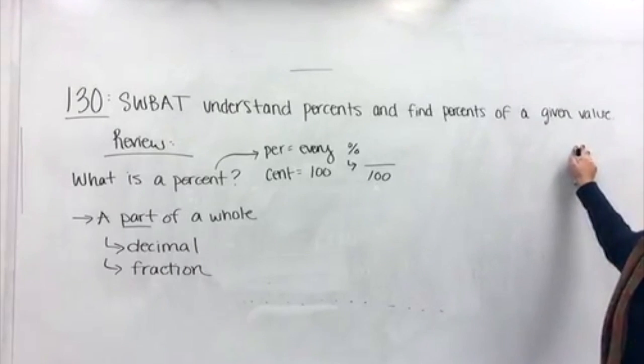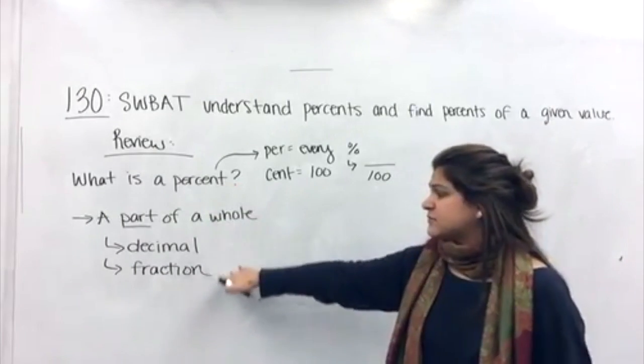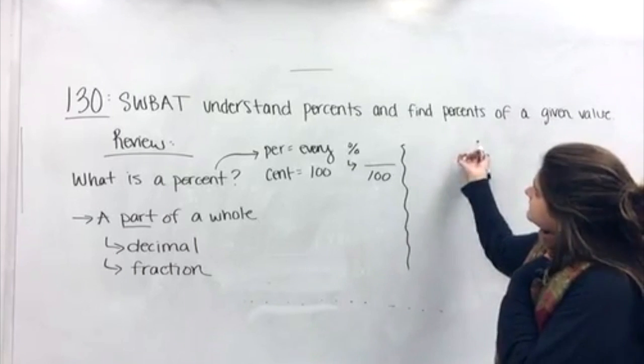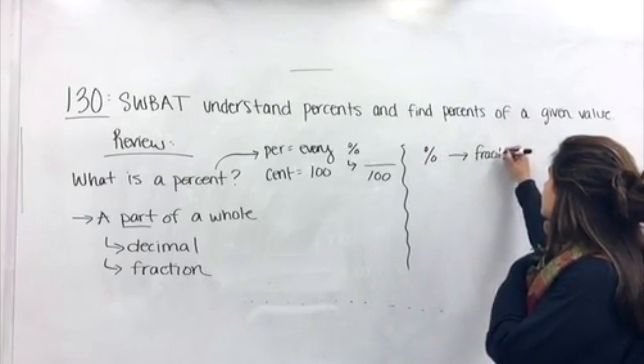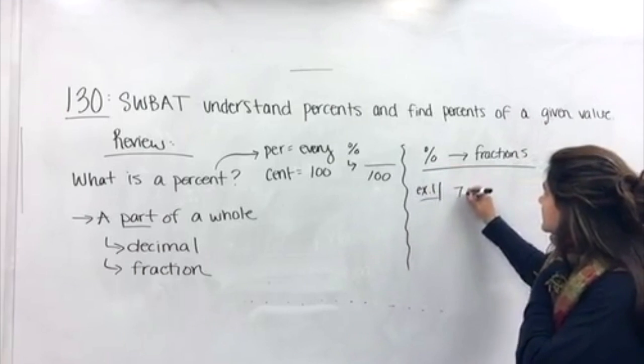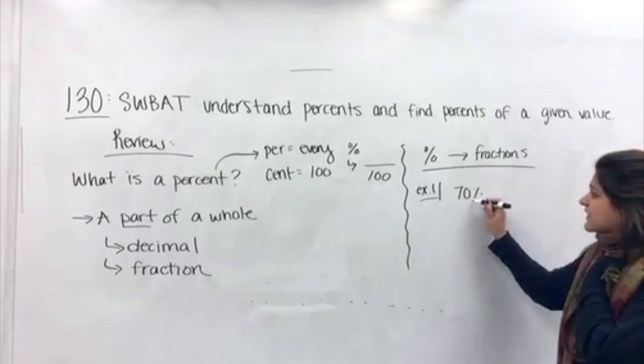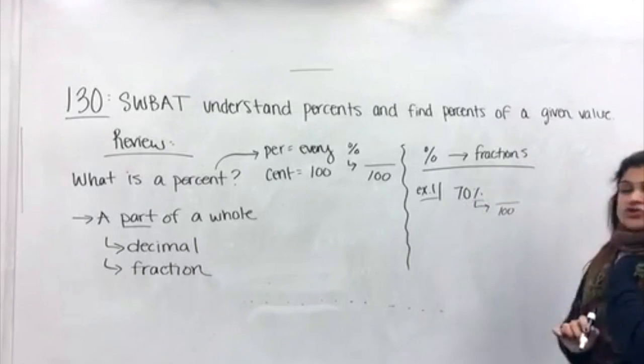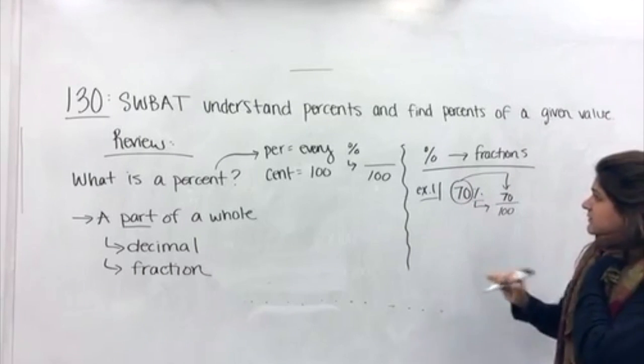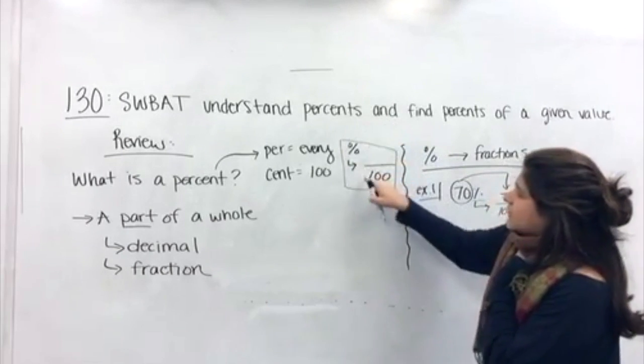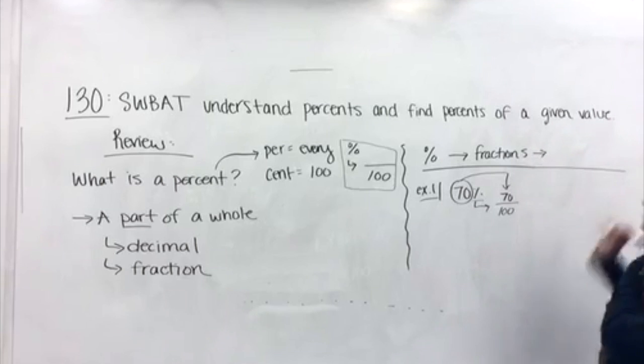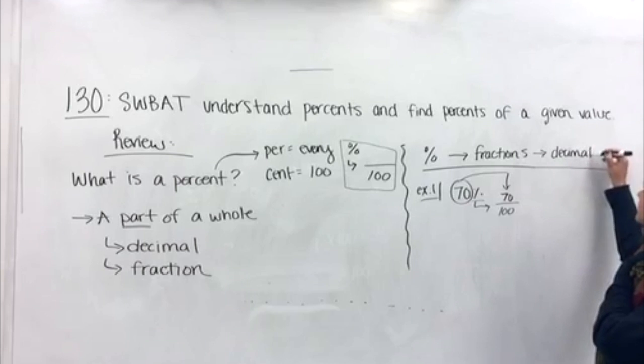Now, when we are finding percents of a given value, it's really important for us to know how to represent percents in terms of a decimal or a fraction. So, again, another little bit of review. Let's go ahead and start with percents to fractions. If I gave you, this is going to be example one, seventy percent, you should be able to understand that it's seventy percent. And, again, percent means out of one hundred. So, it's going to be this value right here, seventy out of one hundred.